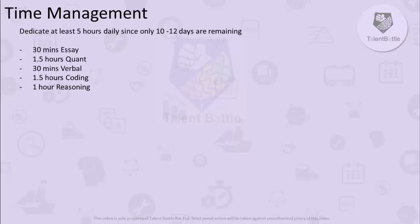In the remaining 10 to 12 days, dedicate at least five hours daily. Divide those five hours as follows: 30 minutes for essay preparation, 1.5 hours for quantitative aptitude, 30 minutes for verbal ability, 1.5 hours for coding, and one hour for reasoning. It will take hard work and patience, but if you do this consistently, it will be very easy to crack the Wipro test.